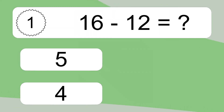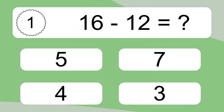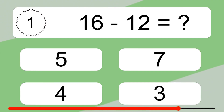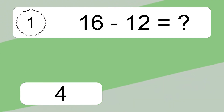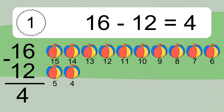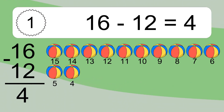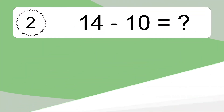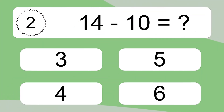16 minus 12 equals what? 16 minus 12 equals 4. Let's count it: 15, 14, 13, 12, 11, 10, 9, 8, 7, 6, 5, 4.